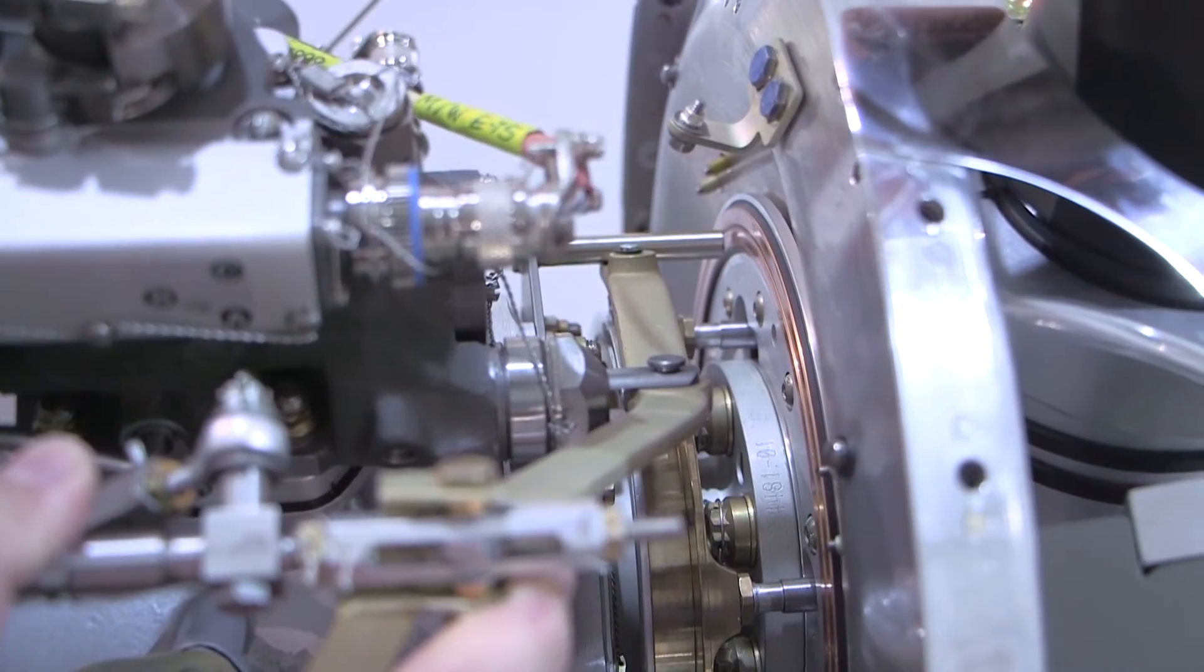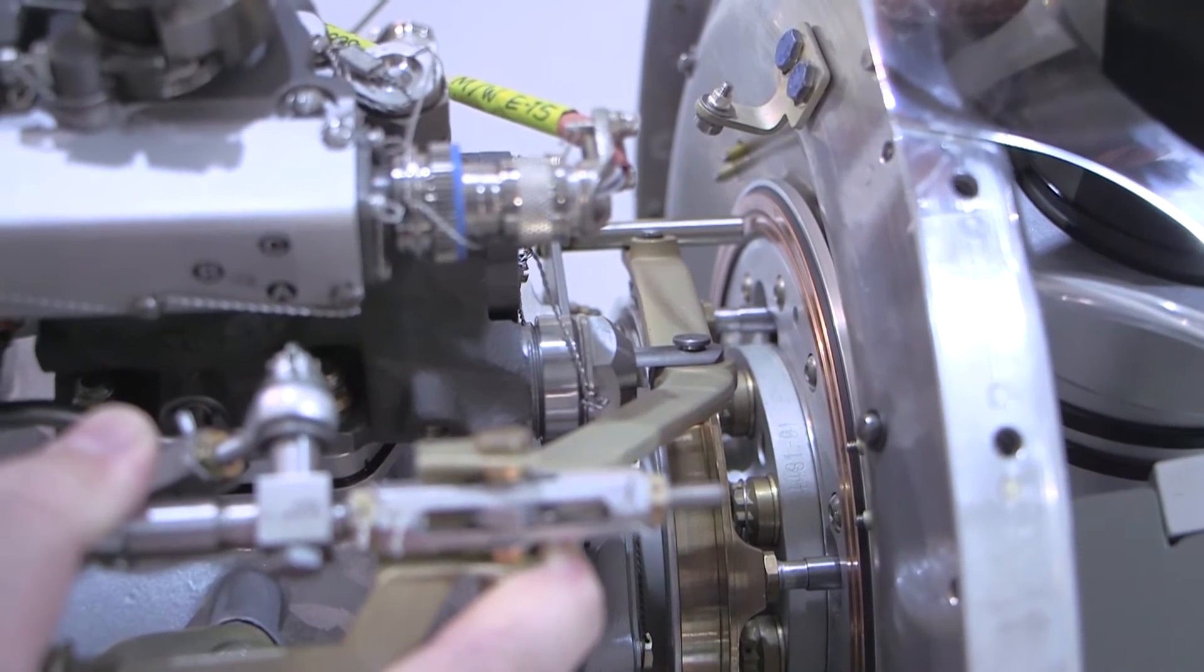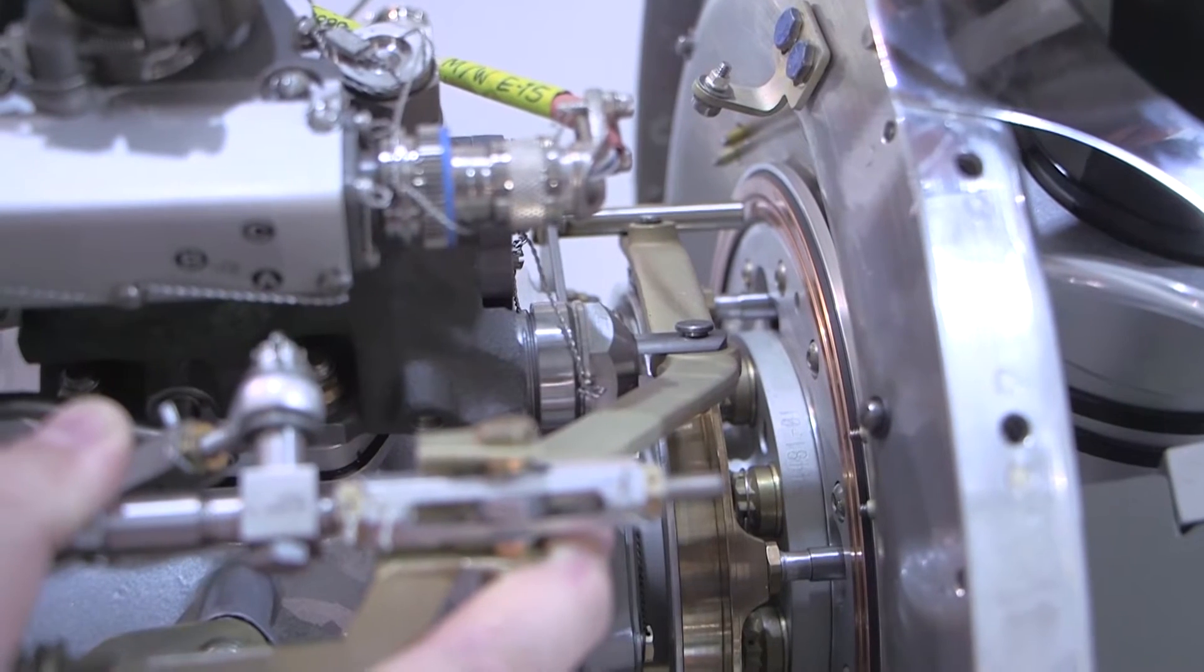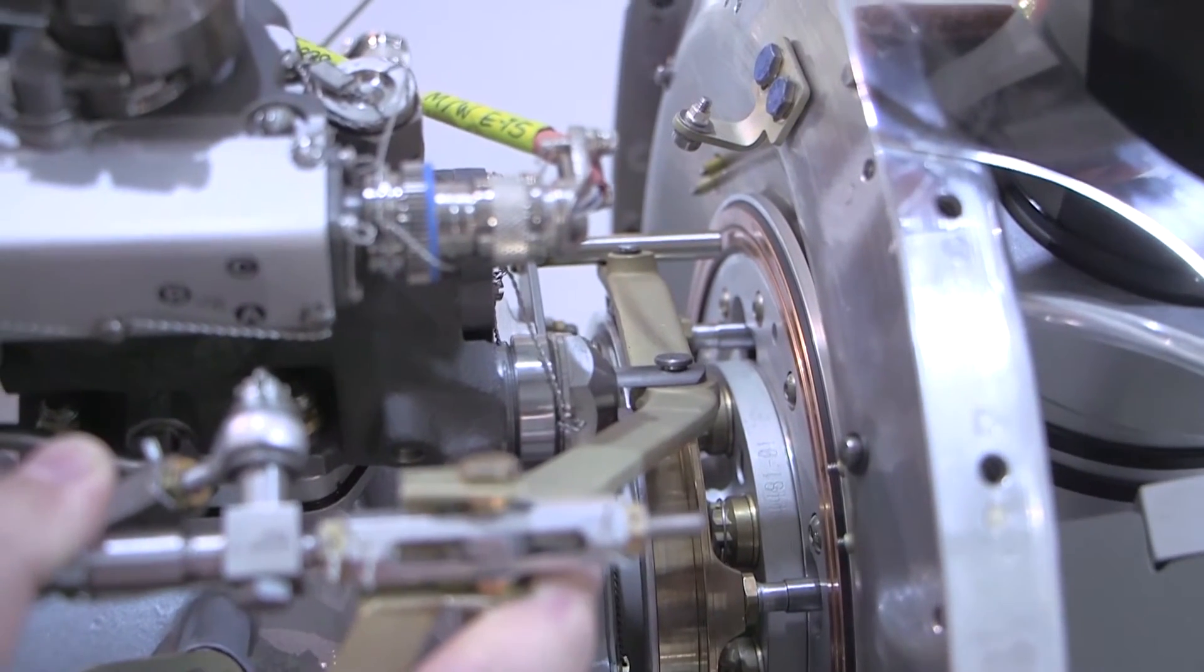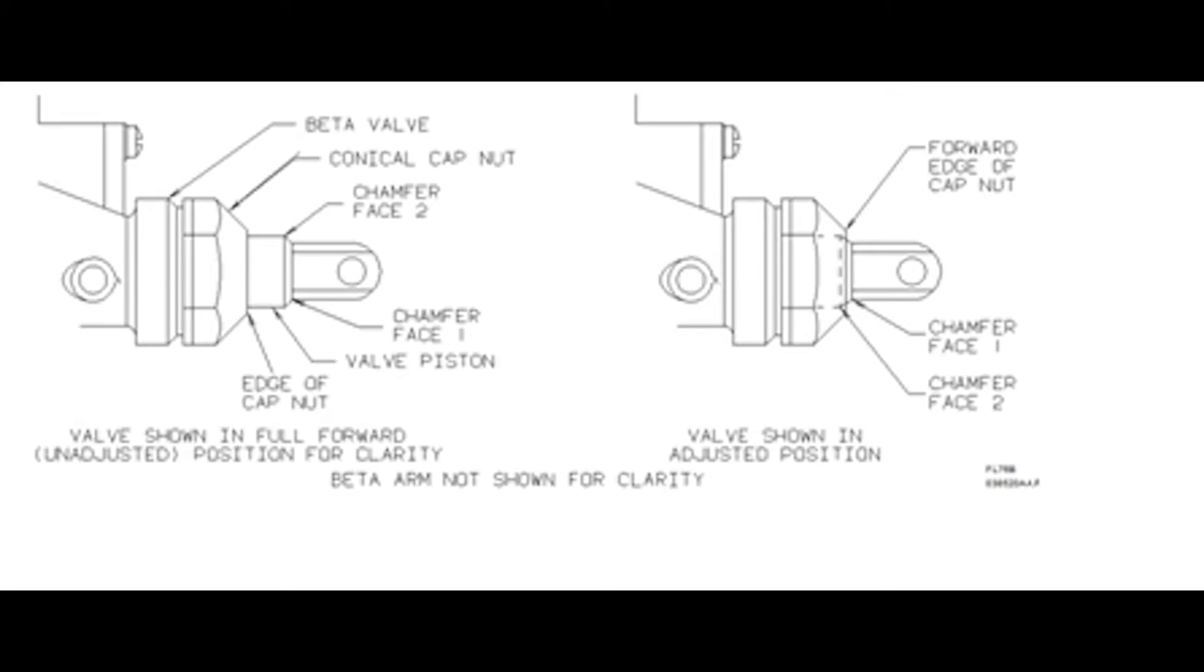Adjust the rear clevis of the reversing cable so that the forward edge of the conical cap nut on the beta valve housing is between the two chamfered faces of the beta valve. It is very important to make sure that the forward edge of the conical cap nut is between the two chamfered faces of the beta valve and that none of the beta valve piston is visible outside the cap nut.